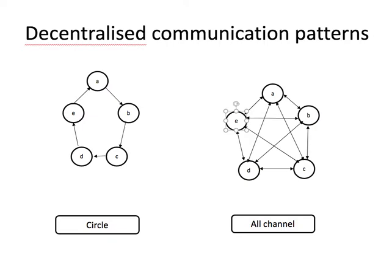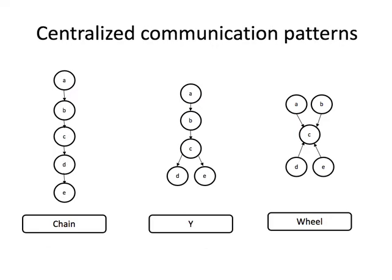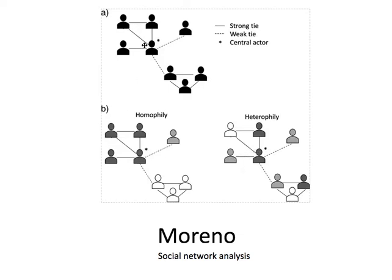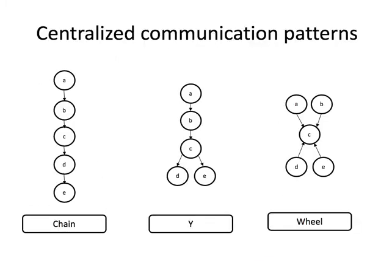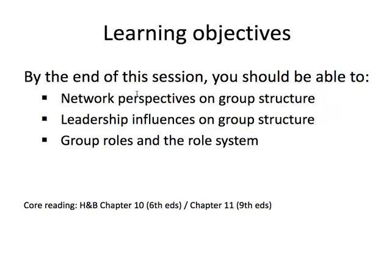For organisation studies and management, thinking about group structures helps us understand how centralised groups are and who the key important actors are. In a chain, A appears most important as they start the whole process, but Moreno realised that in many groups there are no simple straight lines. You have strong ties but also weak ties, so what might formally appear as a chain might in reality — thanks to informal organisation — be more of a circle or all-channel group. The key point in network perspectives is to describe the group in terms of relationships between members: who communicates with each other, who has strong or weak ties, and what hierarchy develops.